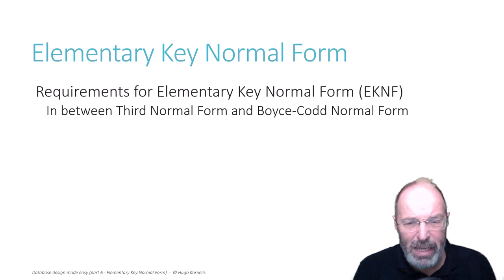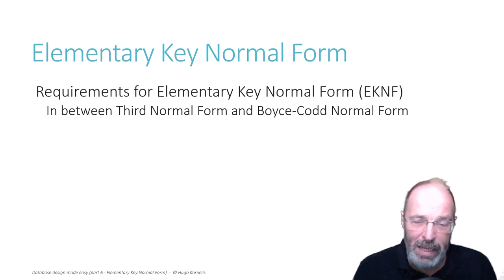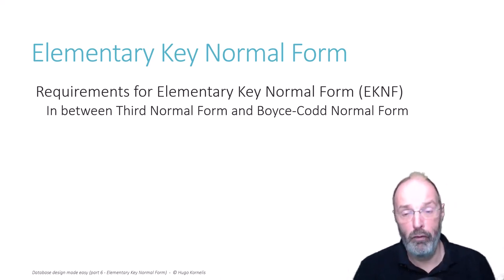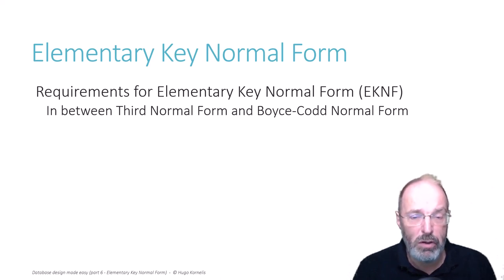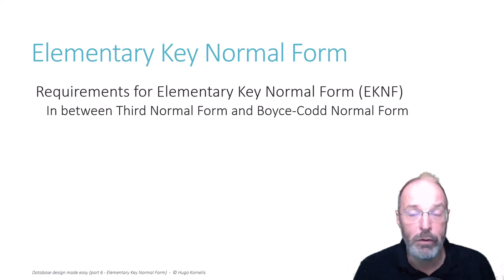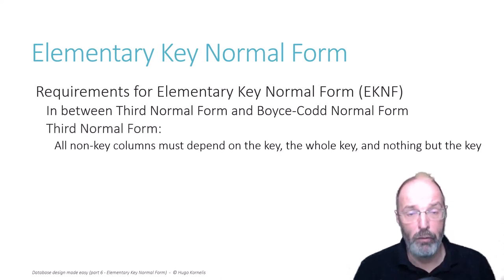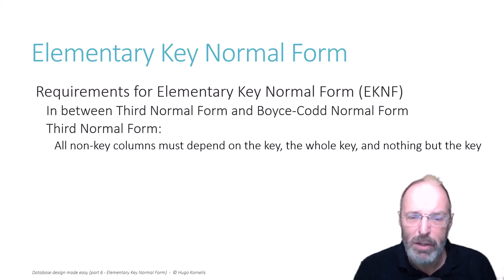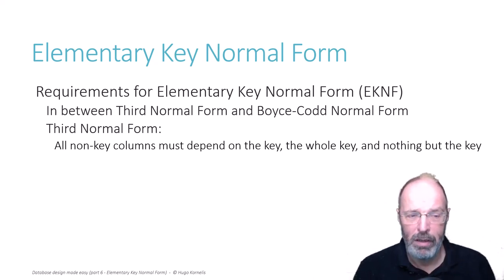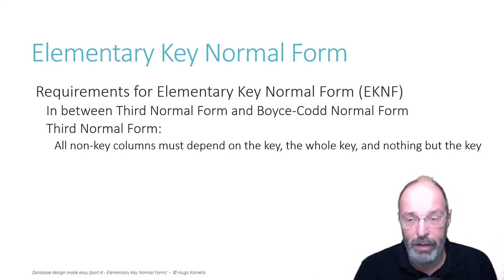Elementary key normal form is in between third normal form and Boyce-Codd normal form. To understand elementary key normal form, let's first review those other two. Third normal form means all non-key columns must depend on the key, the whole key, and nothing but the key. But there is no restriction on key columns — they can do whatever they like.